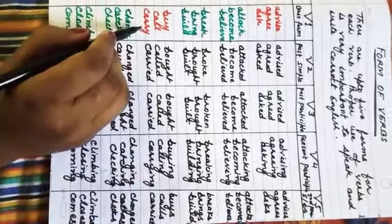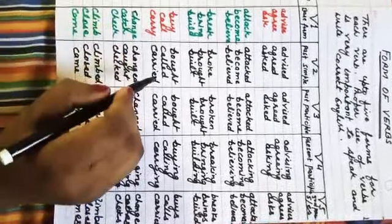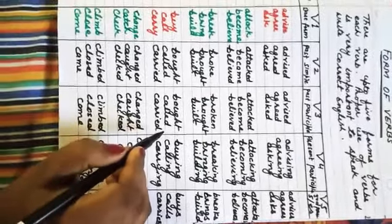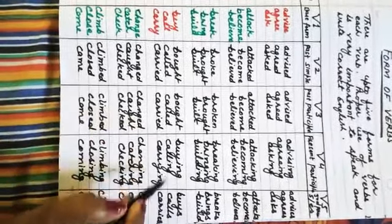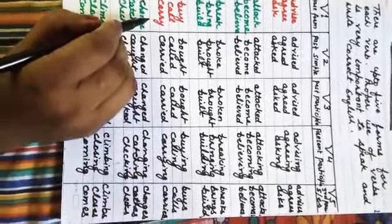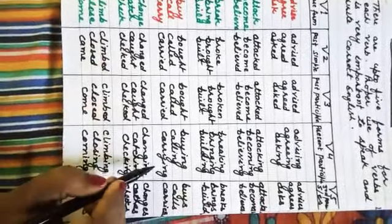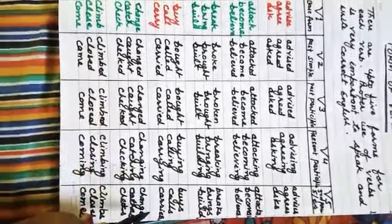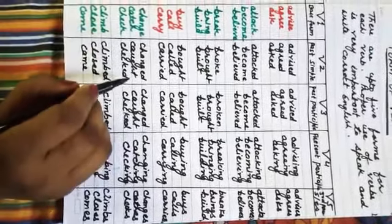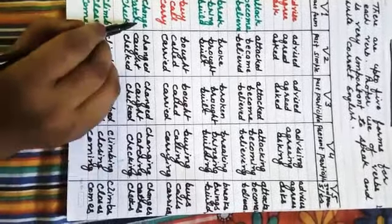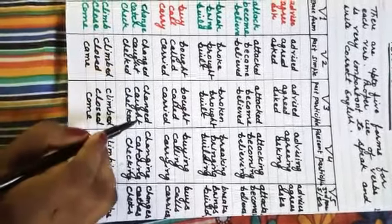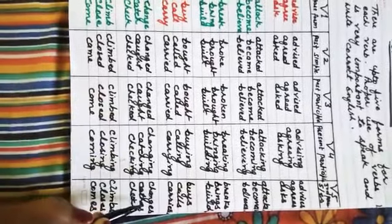Call — meaning 'bulana' (to call). Second form: called. Third form: called. Fourth form: calling. Fifth form: calls. Carry — meaning 'dhona' (to carry). Second form: carried. Third form: carried. Fourth form: carrying. Fifth form: carries. Change — meaning 'badalna' (to change). Second form: changed. Third form: changed. Fifth form: changes.